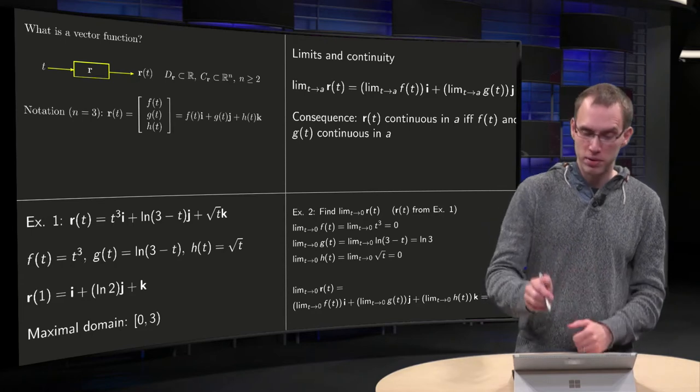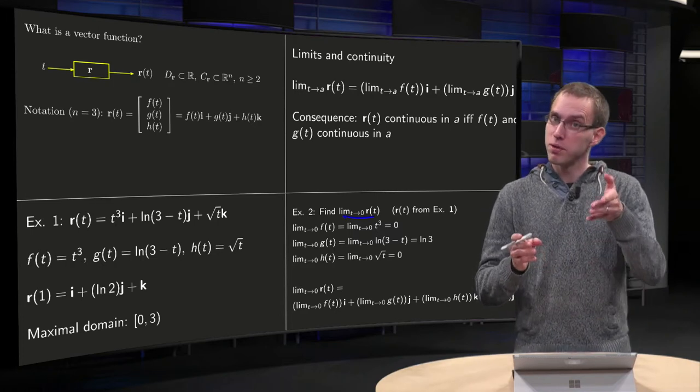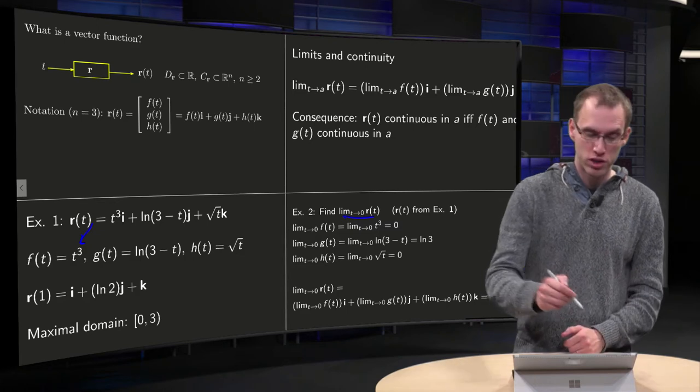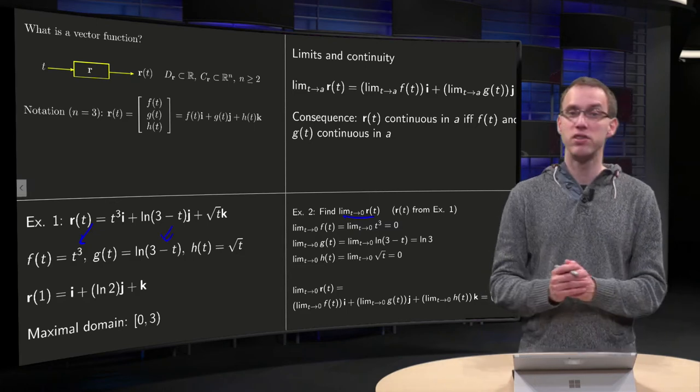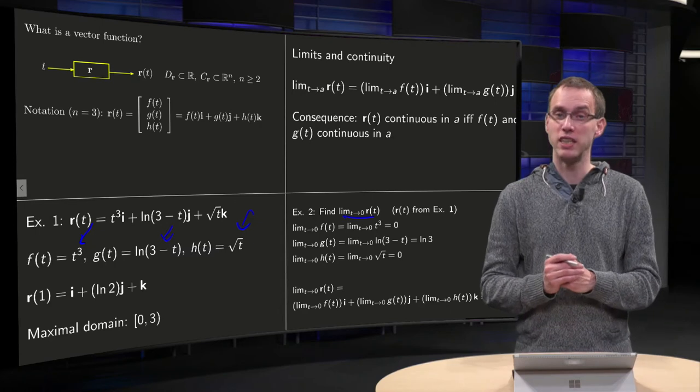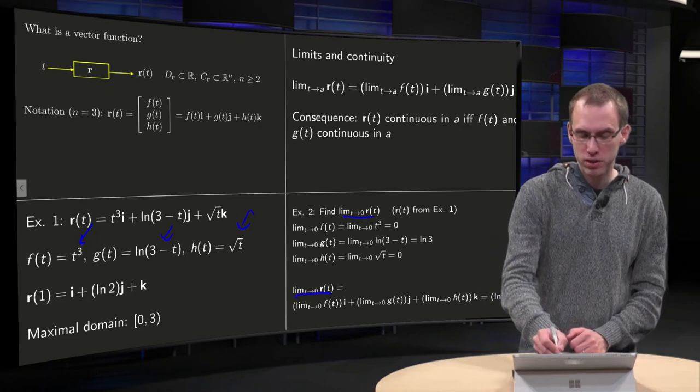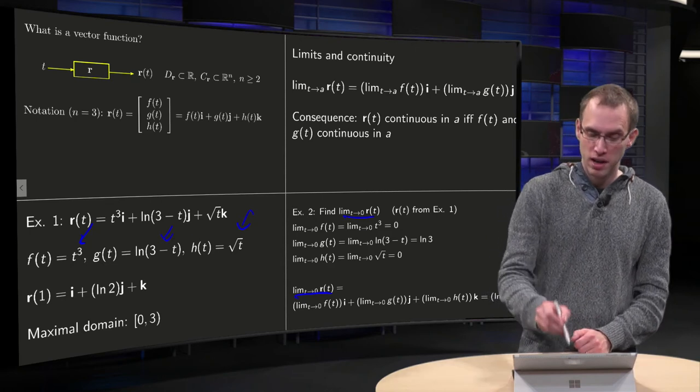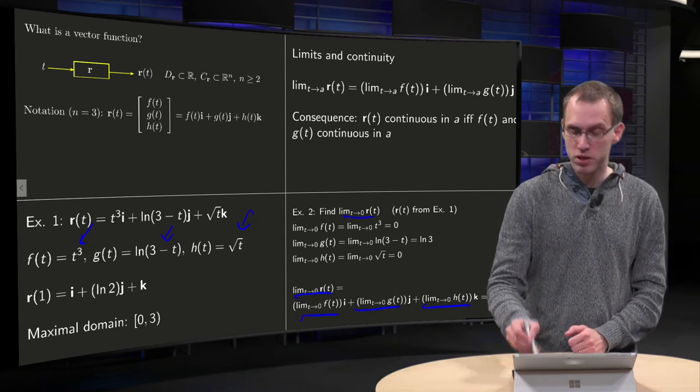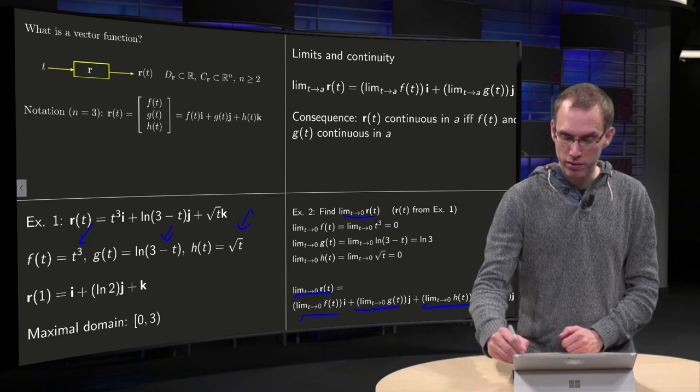So final example, what happens if you take the limit from t to 0 of r(t) from the first example? Well if we take a limit, we have to take the limit of the components of the function, so let's do that. Take the limit from t to 0 of t³, no problem there, it is just 0. Take the limit t to 0 from the ln(3-t), no problem, you can just plug it in, you get ln(3). And take limit of t to 0 of the square root of t, of h, no problem, you can just plug in t equals 0, so you get a 0. And then combine everything. Limit t to 0 of the vector function means limit t to 0 of the first component times i plus the limit t to 0 of the second component times j plus limit t to 0 of the third component times k, which gives you, because there are 0, ln(3) and 0, ln(3) times j.